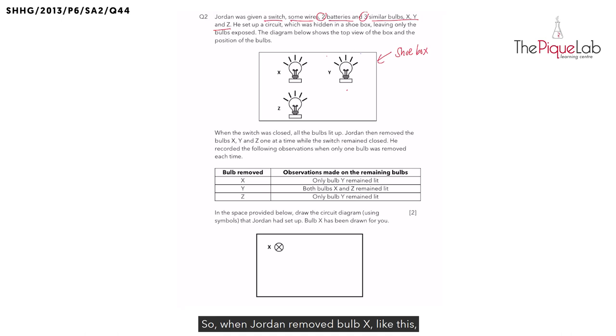So when Jordan removed bulb X like this, he observed that bulb Y remained lit. So can bulb Y be on the same pathway as bulb X? No, it cannot. In fact, it is on a different pathway. Let's write it down.